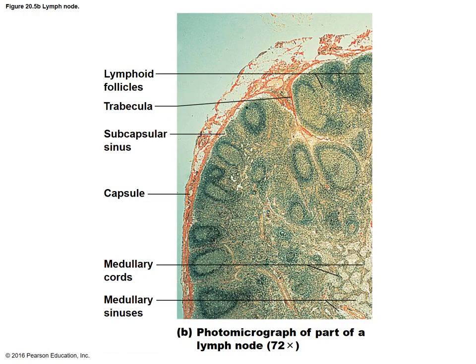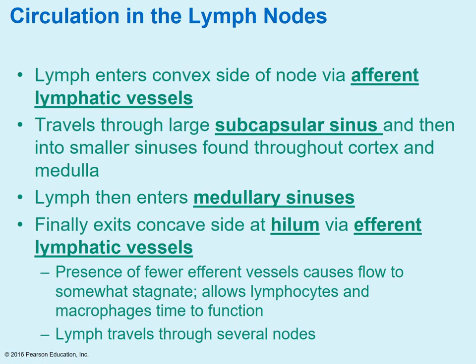This is a photomicrograph of a lymph node. You can see the capsule, the medulla area, and the sinuses where the lymph flows through. The lymph flows in via the afferent lymphatic vessels. A helpful memory trick: think alphabetically — A comes first, so afferent is arriving. Efferent is exiting. The lymph travels in through the afferent lymphatic vessels, moves through the subcapsular then medullary sinuses, and finally leaves through the efferent lymphatic vessels.